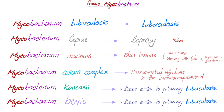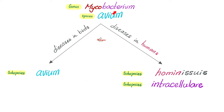Mycobacterium tuberculosis causes tuberculosis. Mycobacterium leprae causes leprosy. Mycobacterium marinum causes skin lesions after swimming or working with fish. Mycobacterium avium complex can lead to pulmonary disease or disseminated infections.